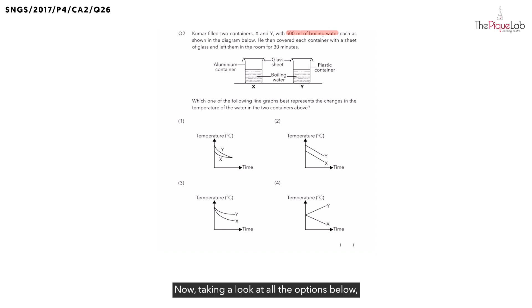Now, taking a look at all the options below, which option doesn't show us that both the water in X and Y is decreasing in temperature. Straight away, we can see it is option 4.